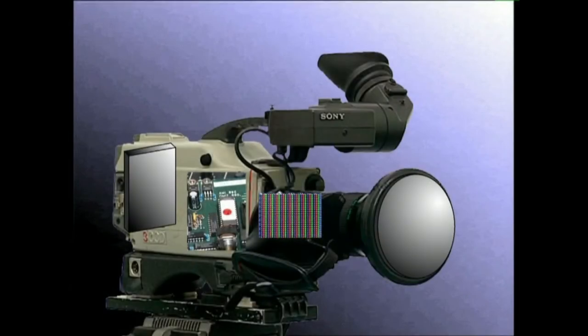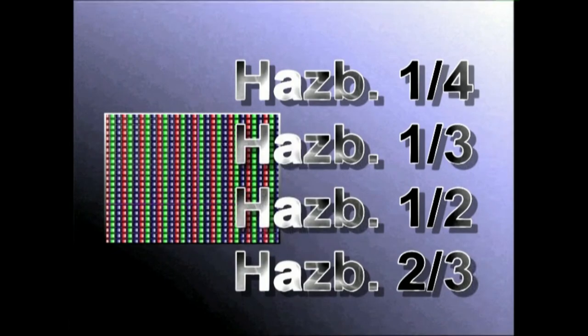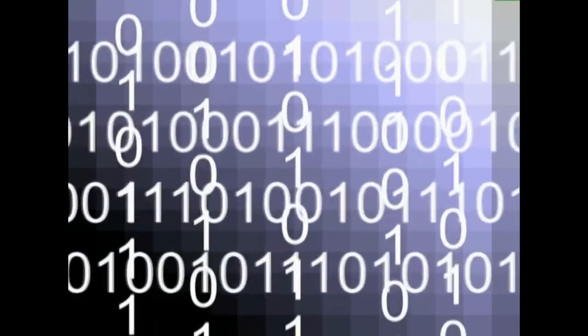Irudiak jasotzen dituen euskarri sentikorra, sentsorea, ez dago lotua irudiaren kalitatearekin soilik. Irudi horren kalitatea sentxorearen ezaugarrien mende dago. Sentxorea azalera laukizuzen batean hilaratan eta zutabetan banaturiko fotodiodoz osatutako zirkuitu elektronikoa da. Azalera hori azbete laurdenekoa, erenekoa, erdikoa edo bi erenekoa izan daiteke. Zenbat eta handiagoa azalera, orduan eta bereizmen hobea ematen du. Fotodiodoak hain dira txikiak non ezinezkoa baita begiez ikustea. Halere, euren txikitasunean, jasotzen duten argiaren arabera, objektiboak ikusitako irudiarekin bat datorren kode digitala sortzen dute.